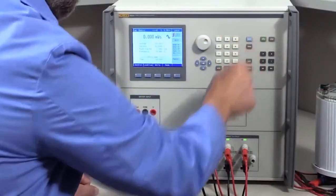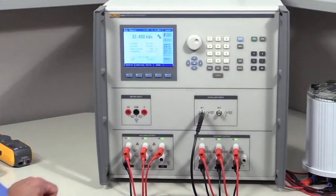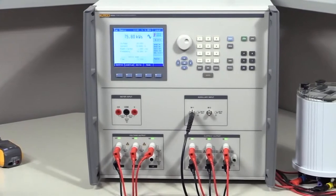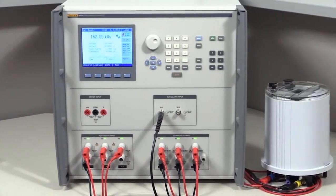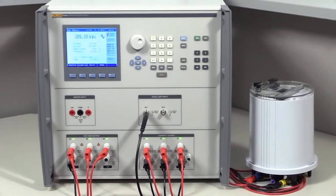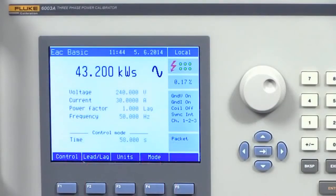You can add even more capabilities with options and accessories. The energy option adds the ability to provide calibrated power over time. This synchronized power capability is used to test energy meters. Exact amounts of energy can be delivered to the meter being tested. The 6003A's energy counter can even be used to compare the meter's energy count to that of the 6003A's calibrated source of energy.